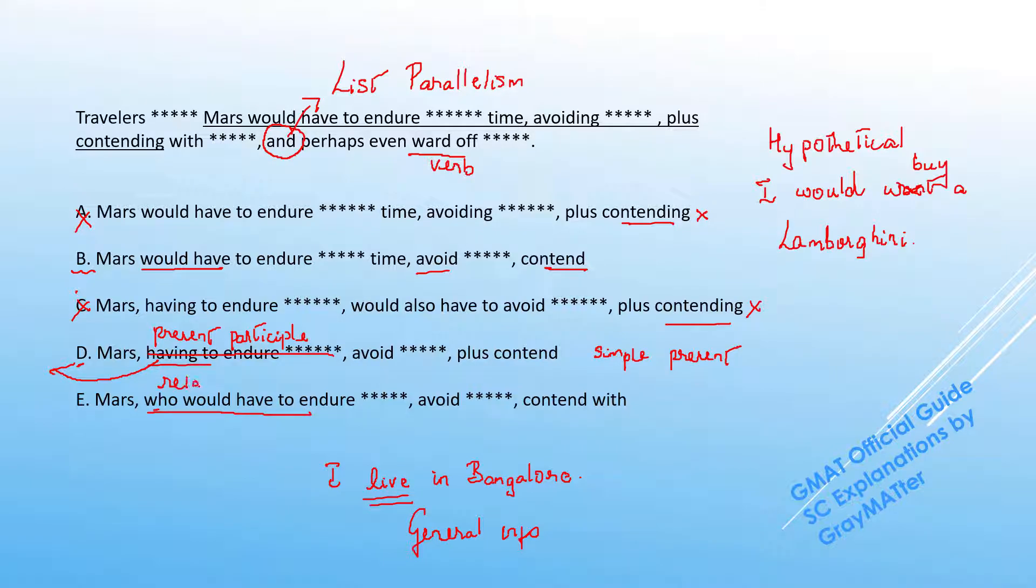This is a relative clause. But just like how this participle modifier was giving extra information about the travelers, this relative clause is also giving extra information about the travelers and can be read around. So again, we have the travelers to Mars avoid, contend, and even ward off, which is again the use of simple present tense to present general information.